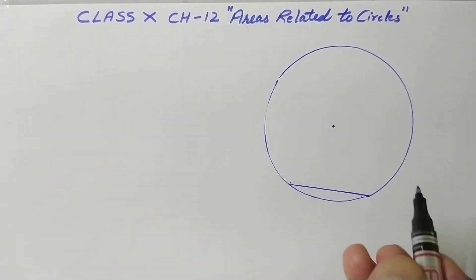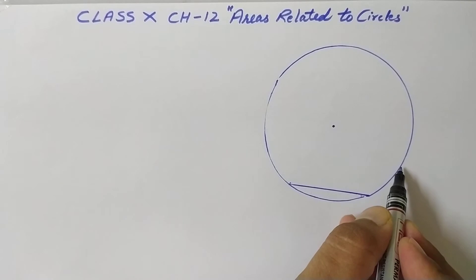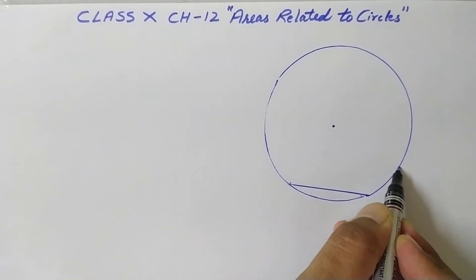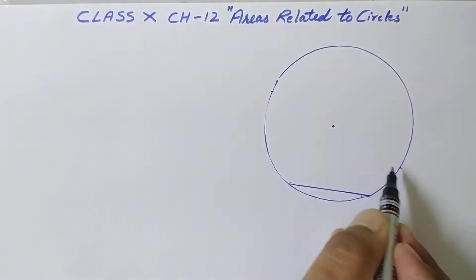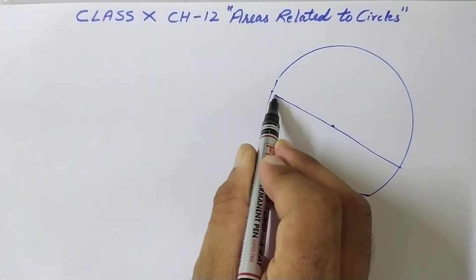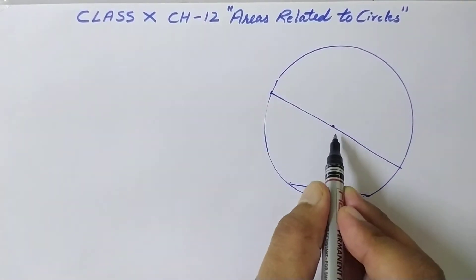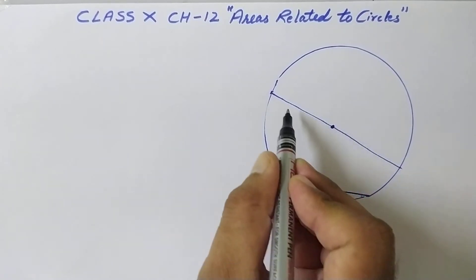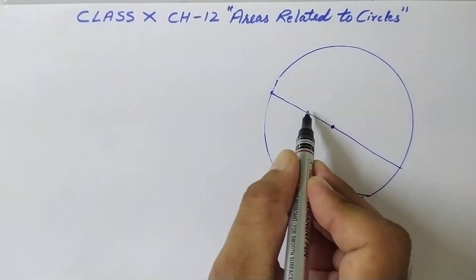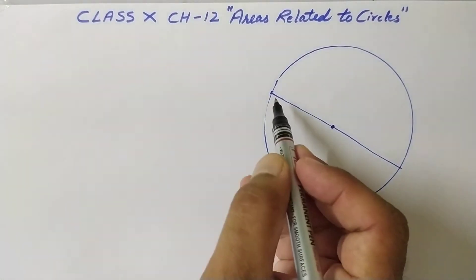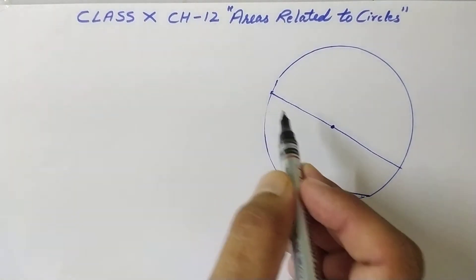If I join two points and this chord passes through the center, it is called the diameter of the circle. So the diameter is the chord which passes through the center — or you can say it is the longest chord in the circle.